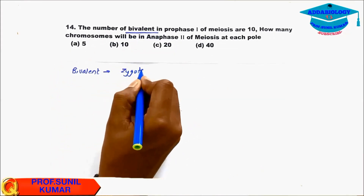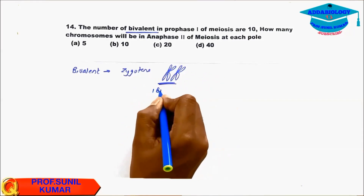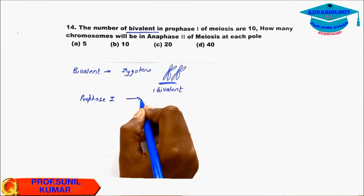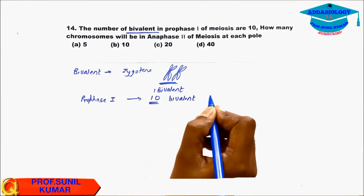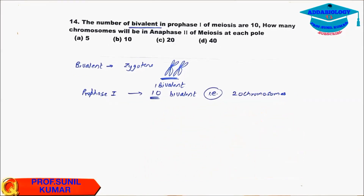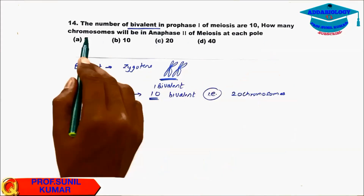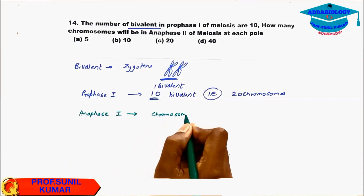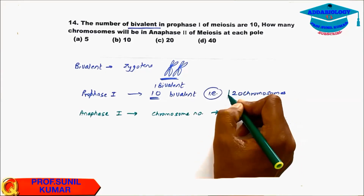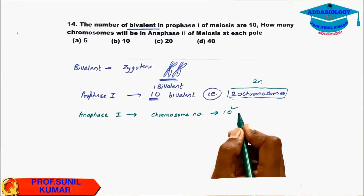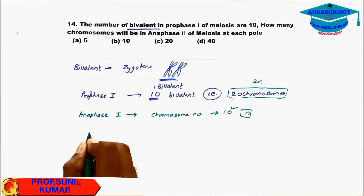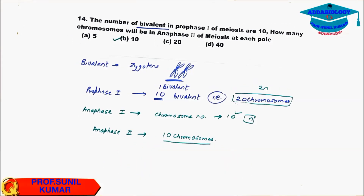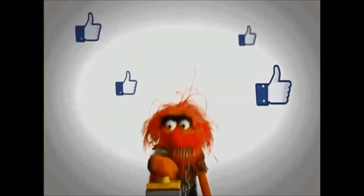Question 14: Number of bivalents. A bivalent is formed in prophase 1 at the zygotene stage, where 2 homologous chromosomes form a pair. If there are 10 bivalents in prophase 1, that means there are 20 chromosomes. In anaphase 1, the chromosome number becomes half due to reduction division, giving 10 chromosomes. In anaphase 2, the same chromosome number continues, so the answer is 10 chromosomes in anaphase 2.